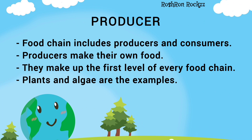Food chain includes producers and consumers. Producers make their own food. They make up the first level of every food chain. Plants and algae are the examples.